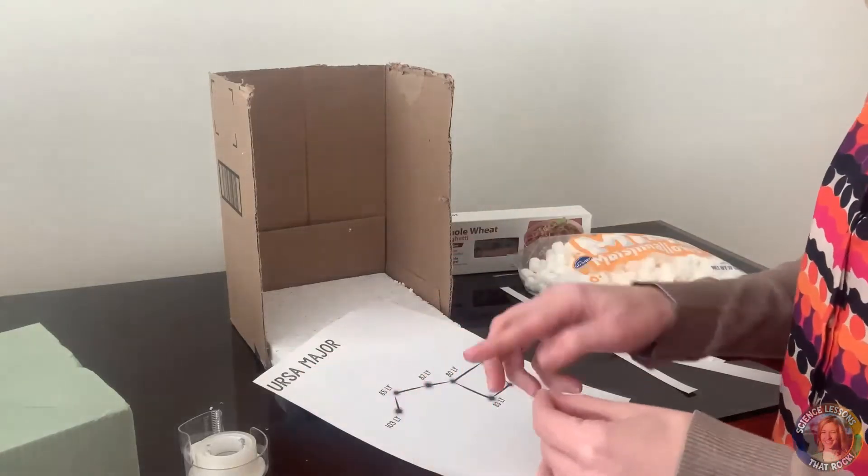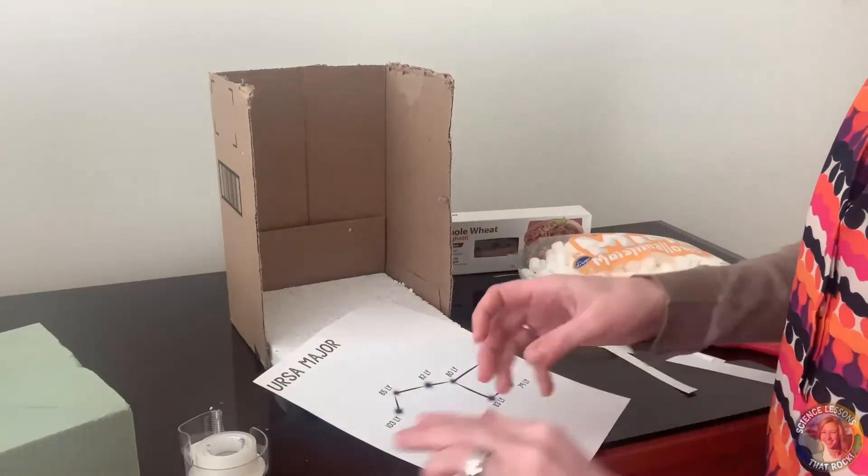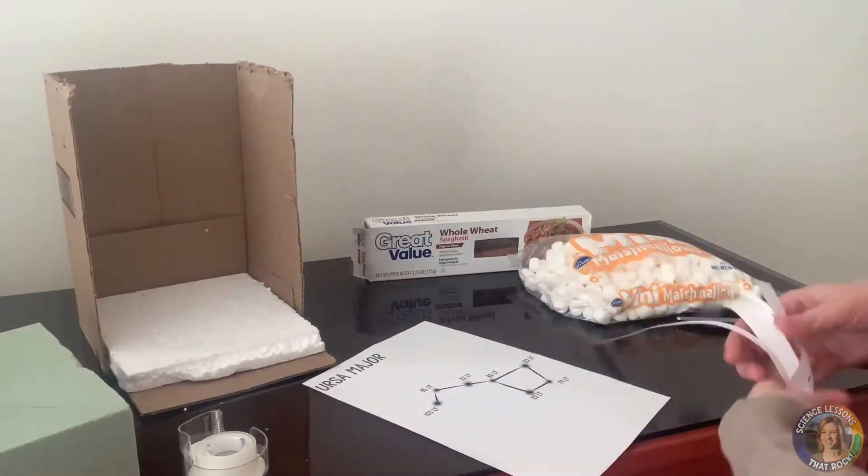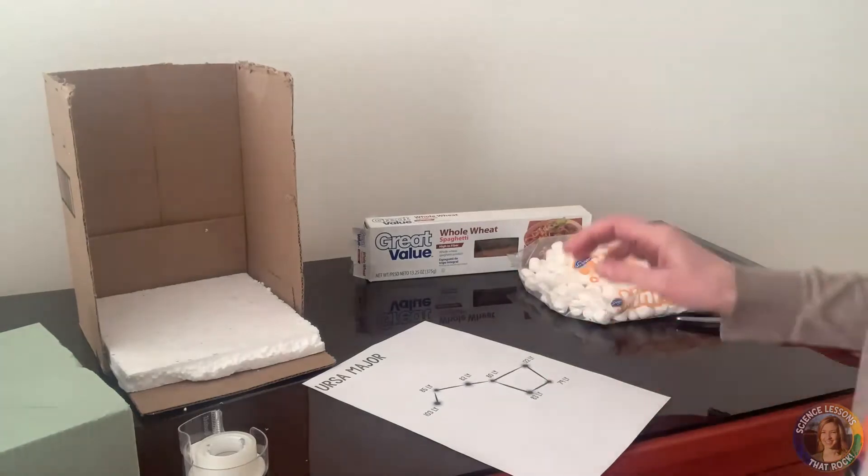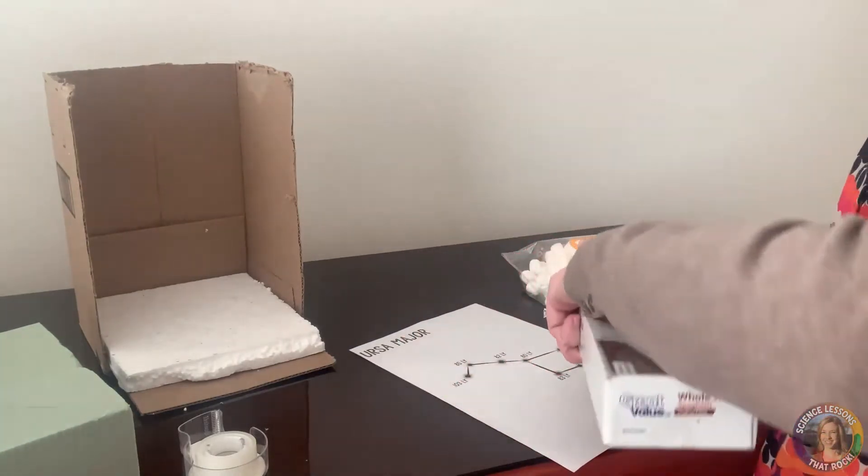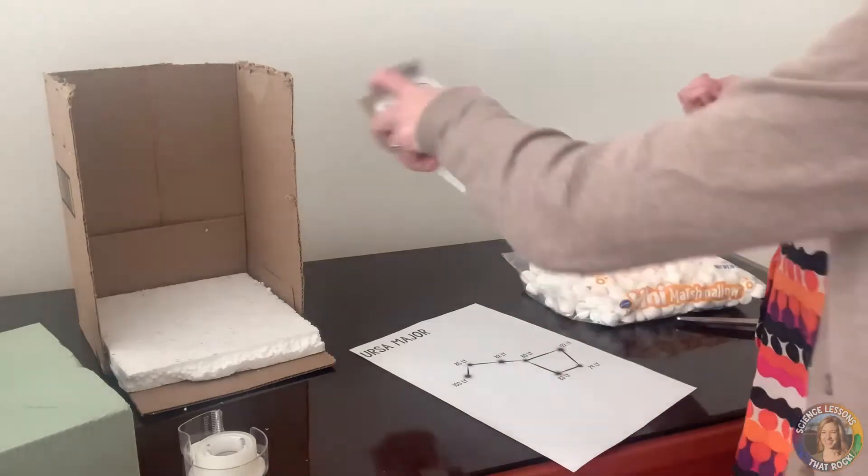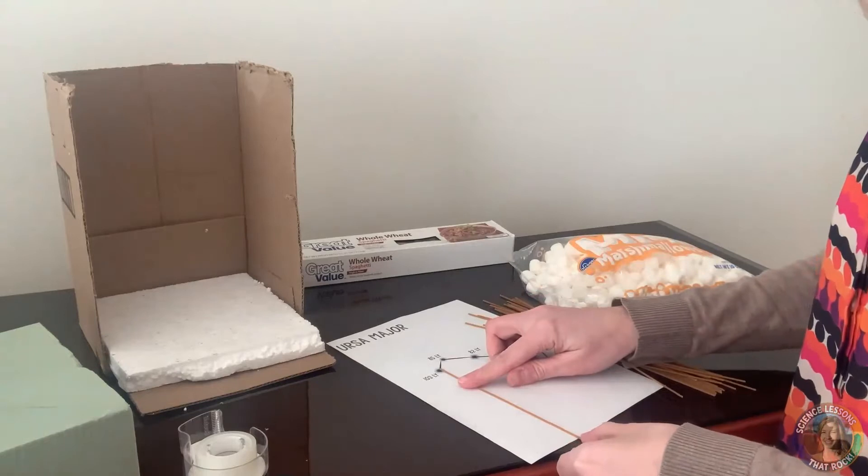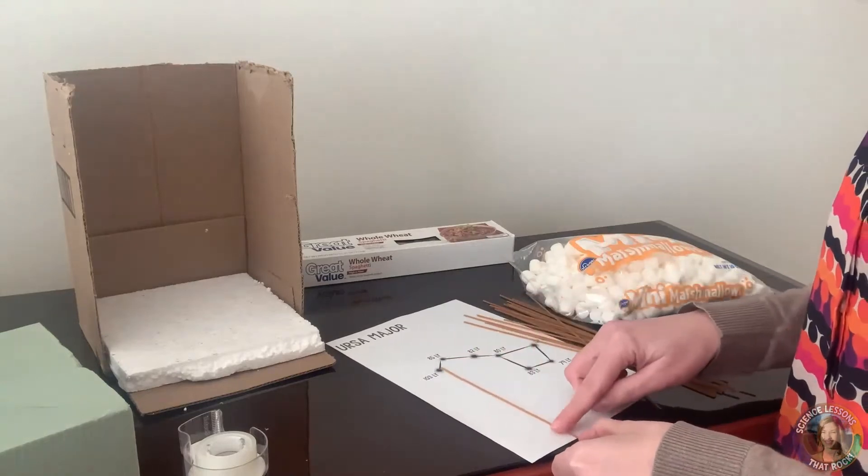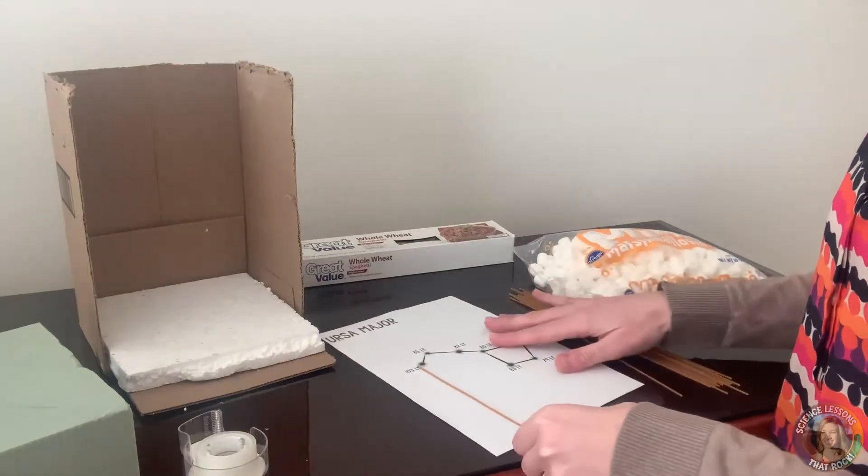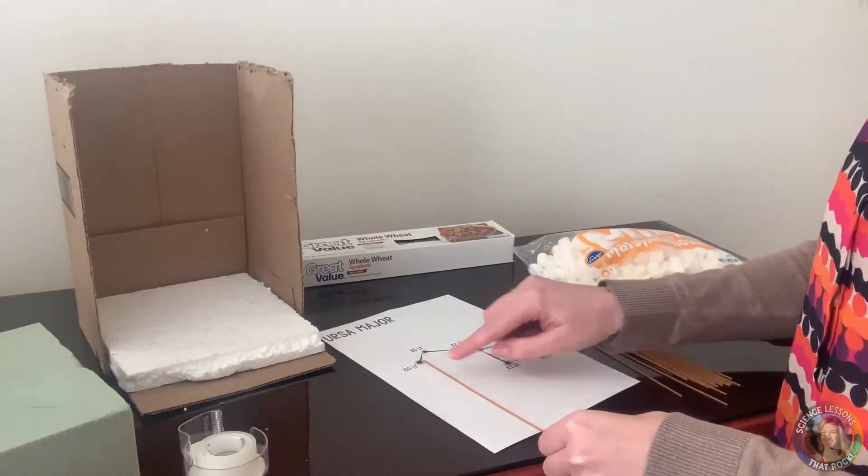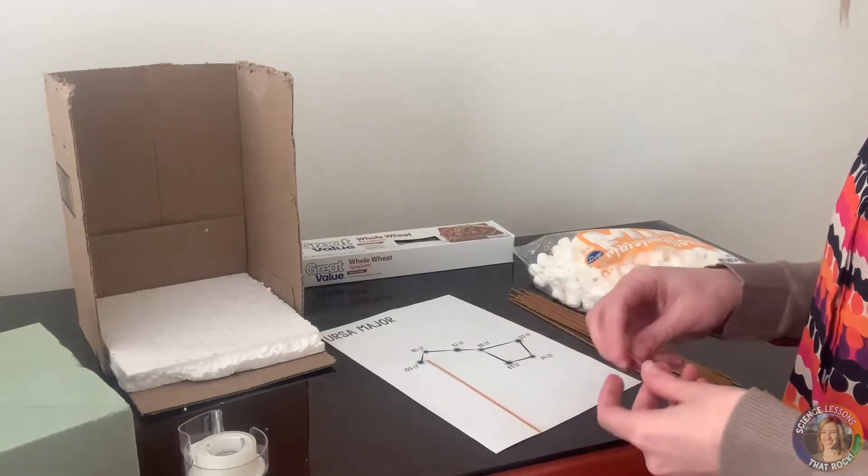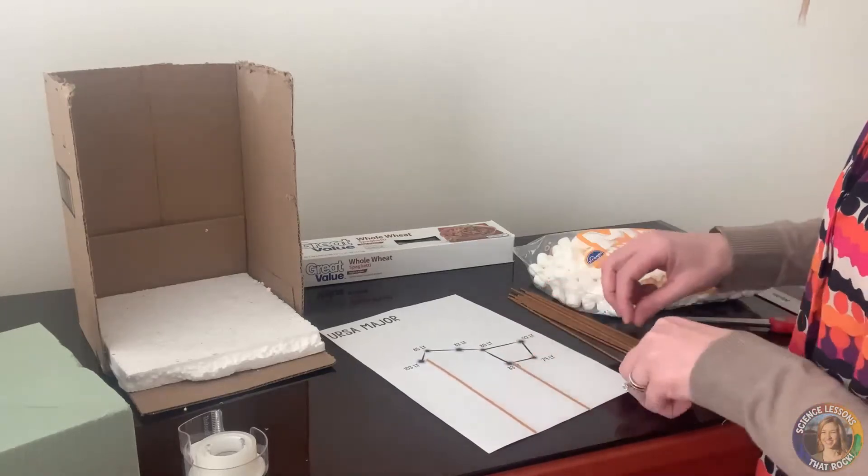Before I tape it and get everything measured, I'm going to take my spaghetti and I'm going to have students lay it out and break the spaghetti at the proper length so they do that first and don't have to worry about it later. So put the spaghetti at the top of the first star and then down at the bottom of the paper I'm going to rip it off. I can actually probably reuse this one.